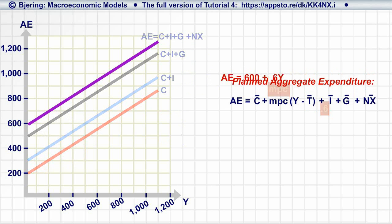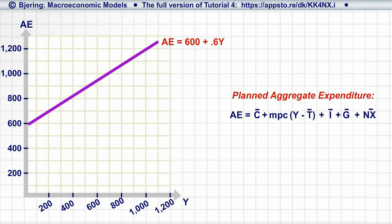Now, let's focus on the AE function and the theory that planned aggregate expenditure varies with income.